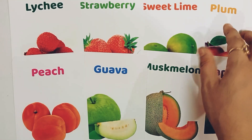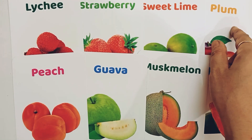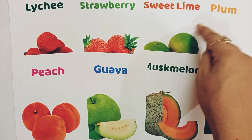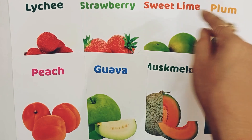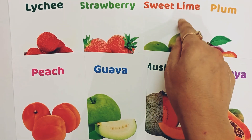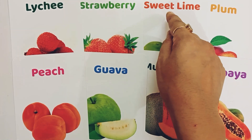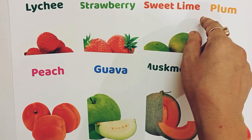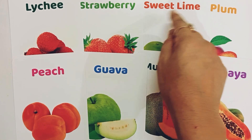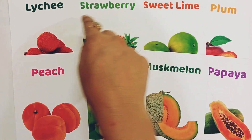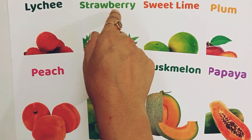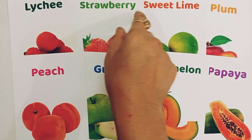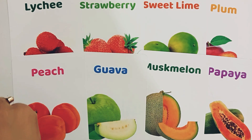P for plum. P-L-U-M, plum. P for plum. P-L-U-M, plum. S for sweet lime. S-W-E-E-T-L-I-M-E, lime. S for sweet lime. S for strawberry. S-T-R-A-W-B-E-R-R-Y, strawberry.